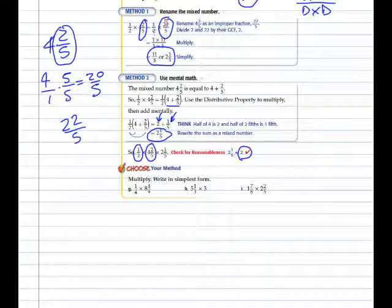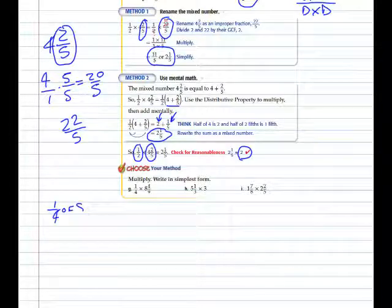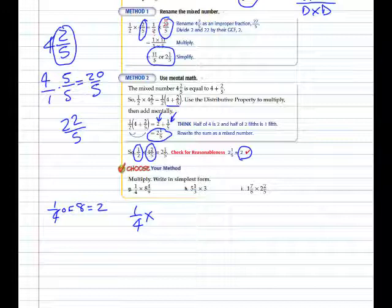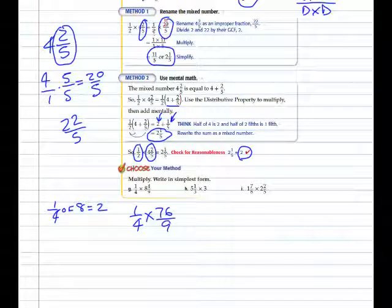For example G, let's estimate: we have one-fourth of eight, which is two. So we're looking for an answer of about two. One-fourth times eight and four-ninths, which would be 76 over nine.